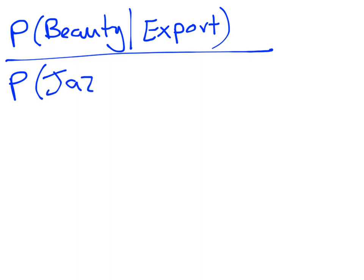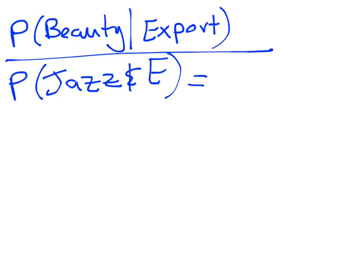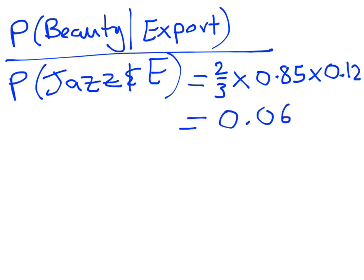For Jazz apples sent for export: two-thirds of the trees are Jazz, 85% of the Jazz apples get picked, and 12% of the picked Jazz apples get sent for export. Combining those three pieces of information: 2/3 × 0.85 × 0.12 gives a probability of 0.068.